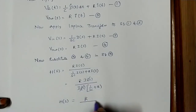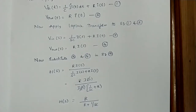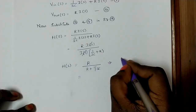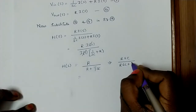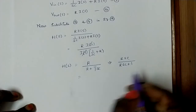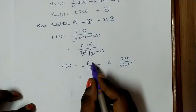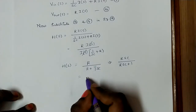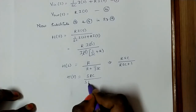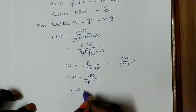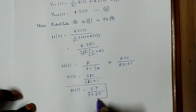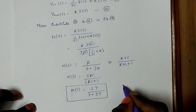Now simplify this equation: H(s) = R / (R + 1/sC) = RsC / (RsC + 1). Multiplying numerator and denominator by sC and rearranging, it is represented as sRC / (1 + sRC), which can be written as s·τ / (1 + s·τ). This is the transfer function of the high pass RC circuit.